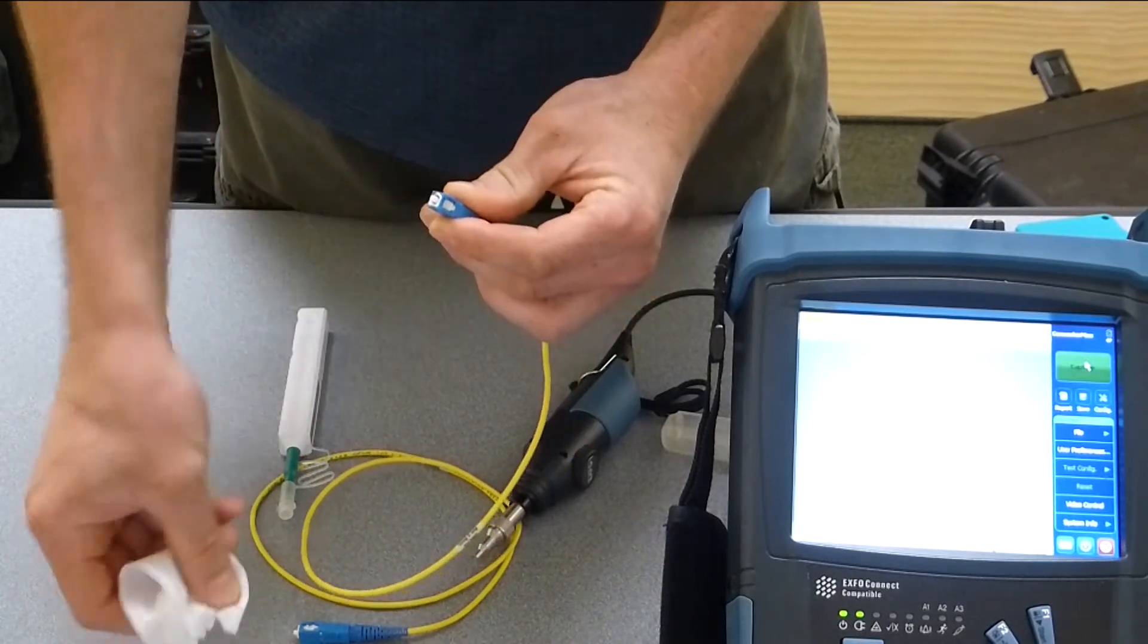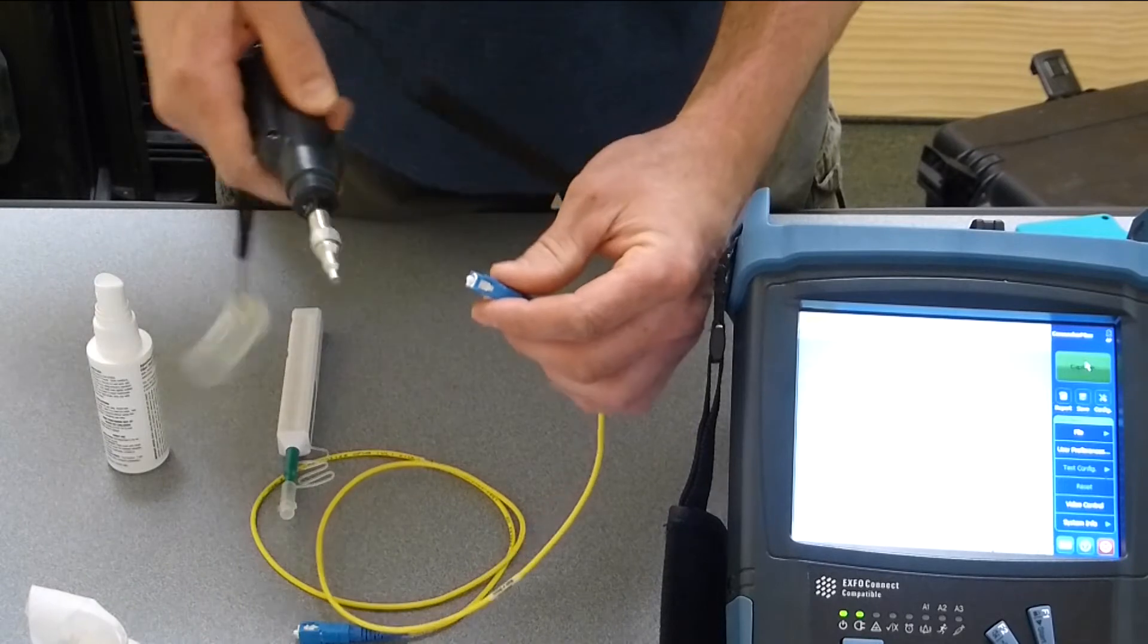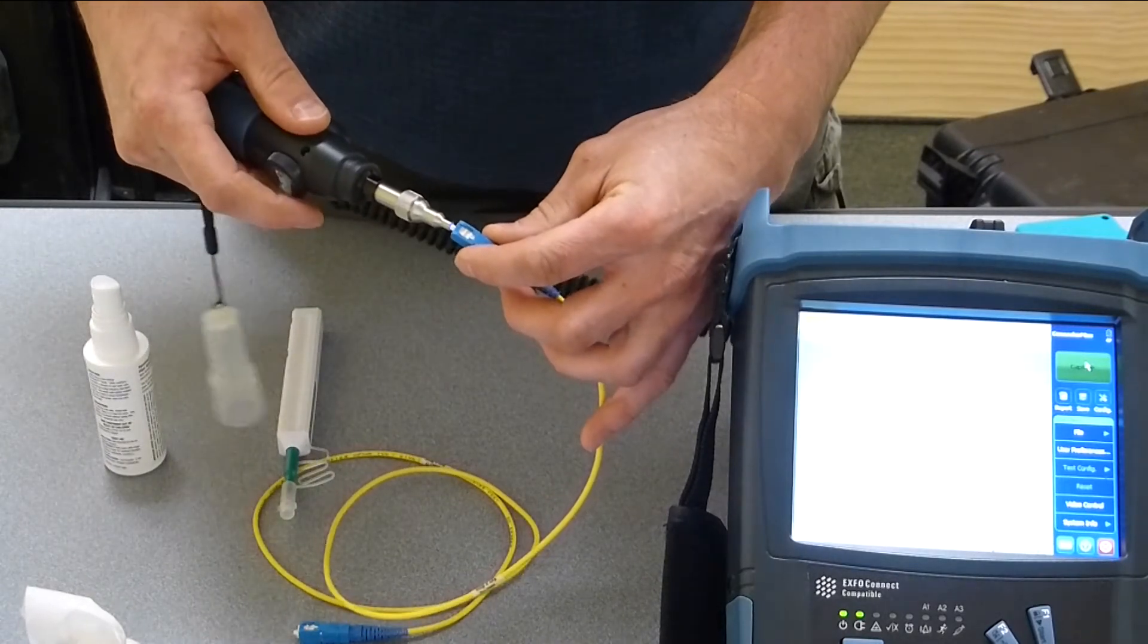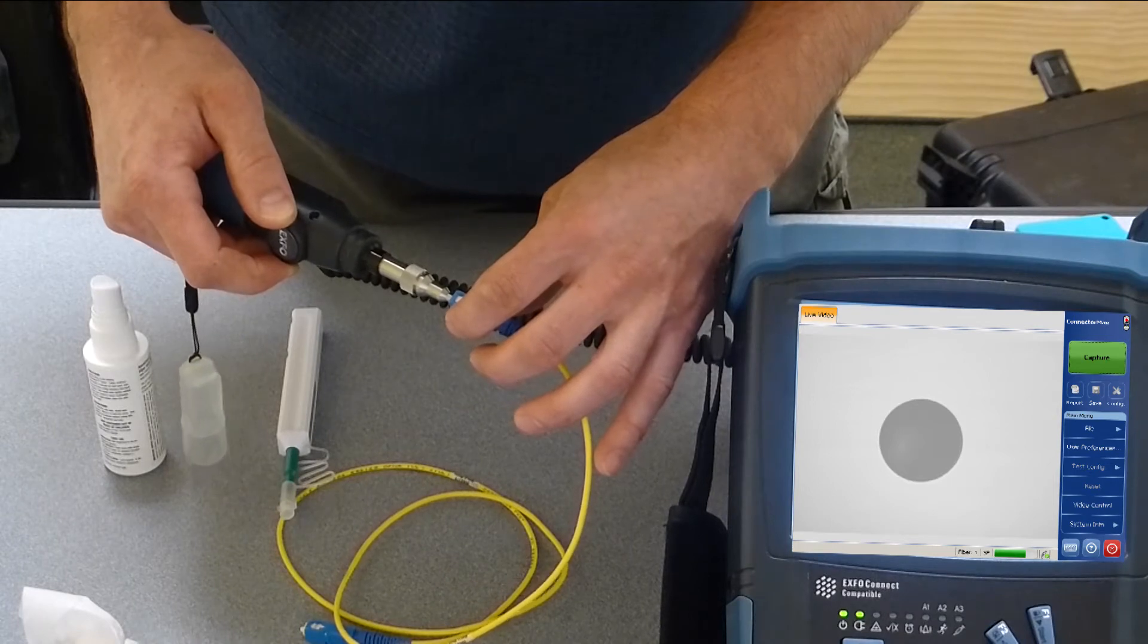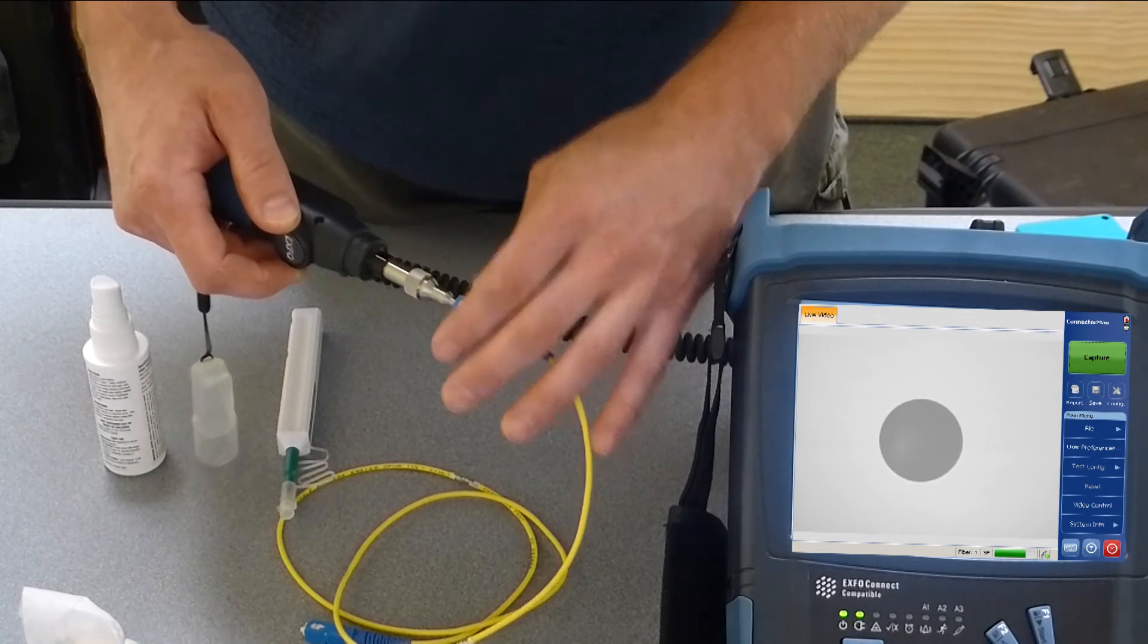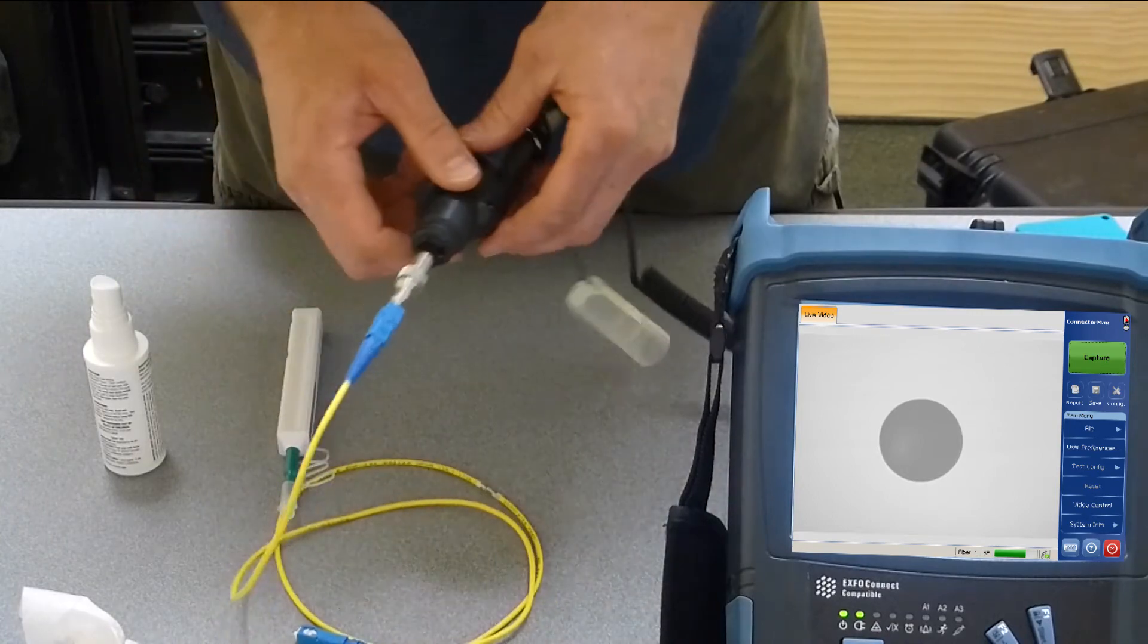Notice how I drag my thumb across that. We're trying to pull any contaminants we can right off the side of the ferrule. So we can see now the connector is nice and clean. We'd be able to install that in test equipment or a system.